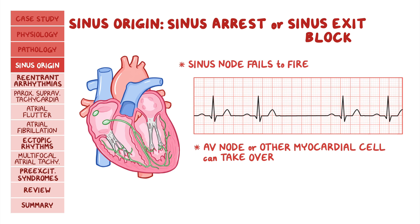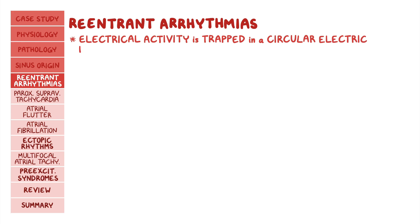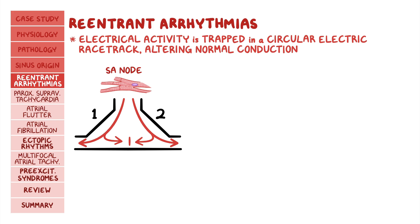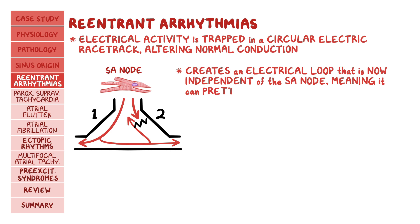The second type of supraventricular arrhythmias are re-entrant arrhythmias. In this type, electrical activity is literally trapped in a circular electric racetrack, altering normal conduction. To understand this, picture a single myocyte with two branches triggering two adjoining pathways, one and two. Under normal circumstances, electrical activity starts at the SA node and travels from one myocyte to the other. If pathway two was damaged during a myocardial infarction, the wave of depolarization rushes through pathway one and then returns backwards through pathway two, creating an electrical loop that is now independent of the SA node.